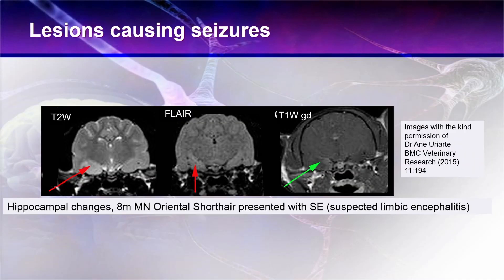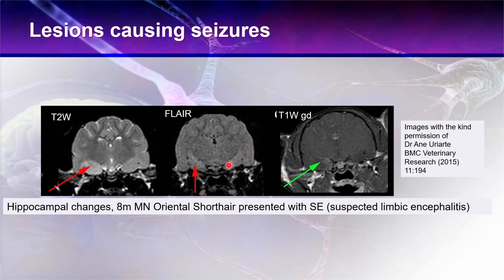Here we have another example. I have to thank Anna for allowing me to use these images. This is a cat that she originally saw with suspected limbic encephalitis. There are hippocampal changes in this cat. On the T2-weighted images, we have a swelling of the mesial temporal lobe. We can also see that change on the FLAIR, and we can also see contrast uptake. With limbic encephalitis, we will often have bilateral changes, and there's a suspicion of some edema on the other side, but it's not clearly realized here.